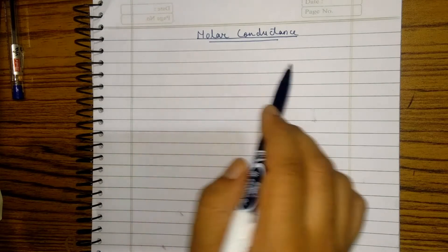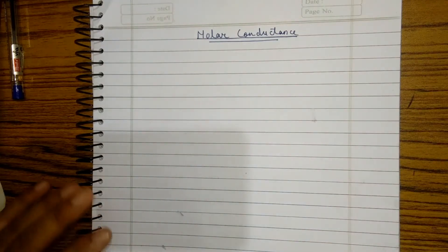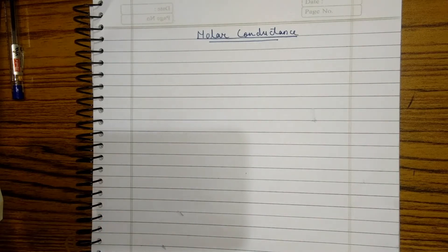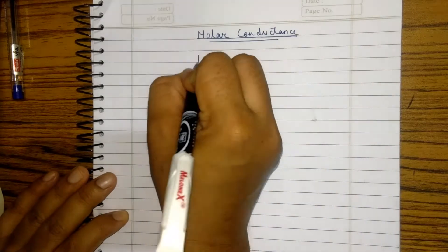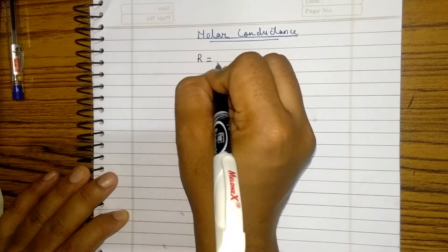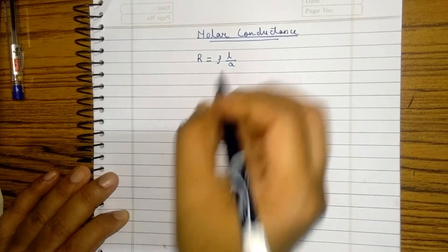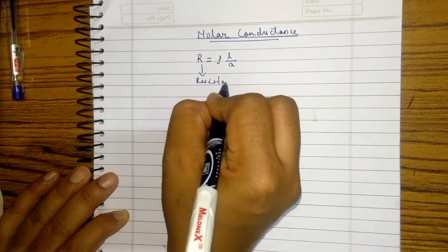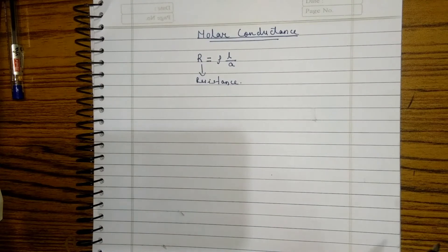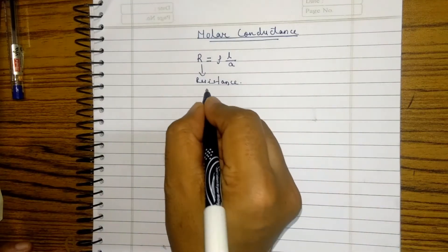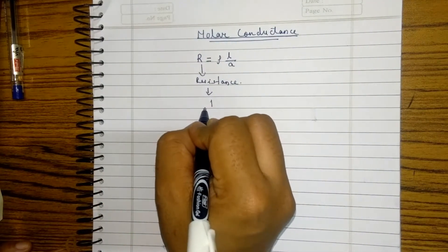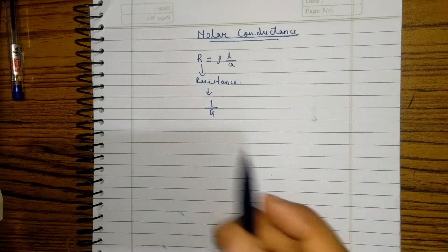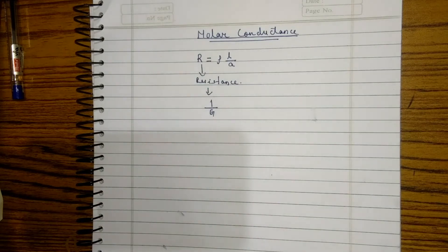Let us discuss today about the molar conductance of an electrolyte or of a solution. Before going into the details of molar conductance, we have already studied that R is equal to rho times L by A, where R is the resistance of the solution. Resistance is the reciprocal of conductance, or we can say that conductance is the reciprocal of resistance.